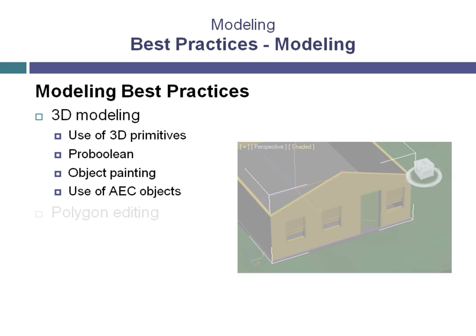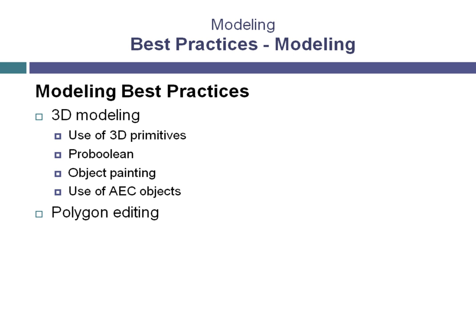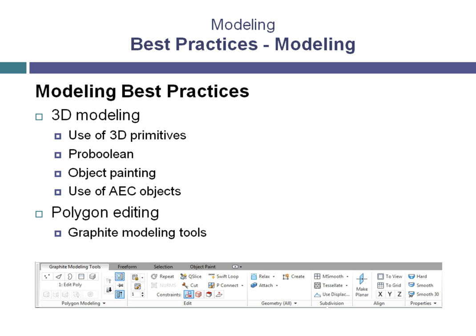When it comes to polygon editing, there are also an enormous number of best practices and shortcuts that can be used to minimize the amount of time it takes to model an object. One of the best practices when it comes to editing polygons is to learn how to use the graphite modeling tools efficiently. The graphite modeling tools themselves are only a toolbox — it is the efficient and proper use of those tools that are important.